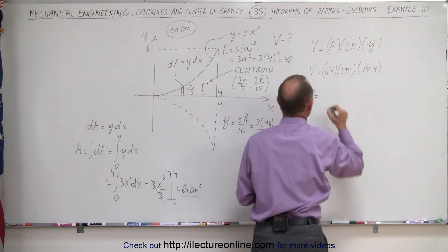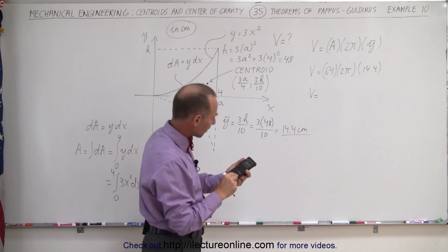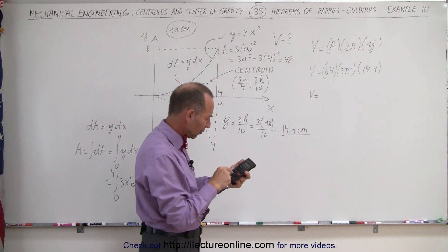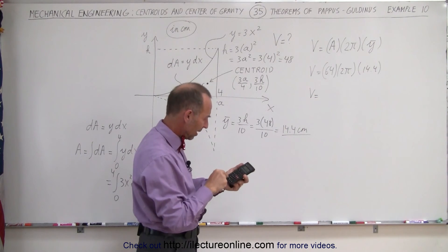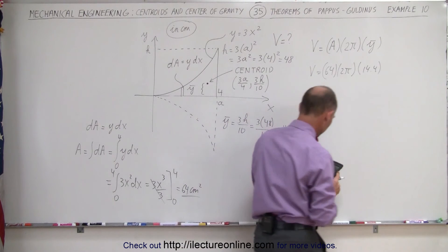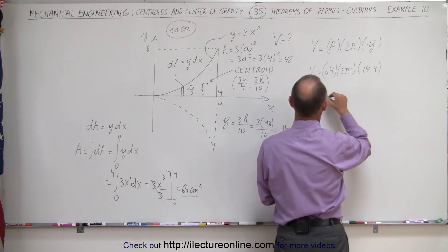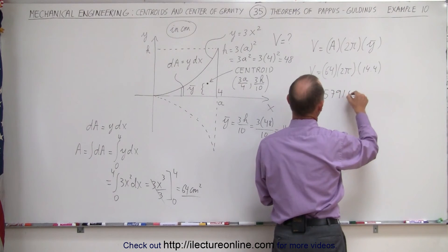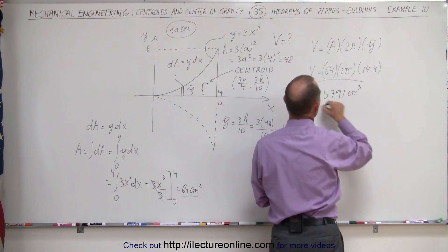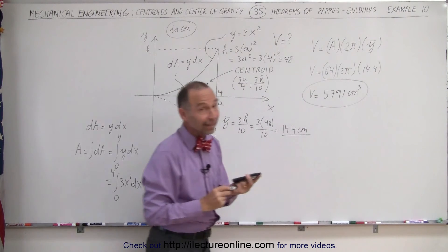Finally, that's going to be the volume in cubic centimeters times 64 times 2 times π equals the total volume of 5791 cubic centimeters. And that's how that's done.